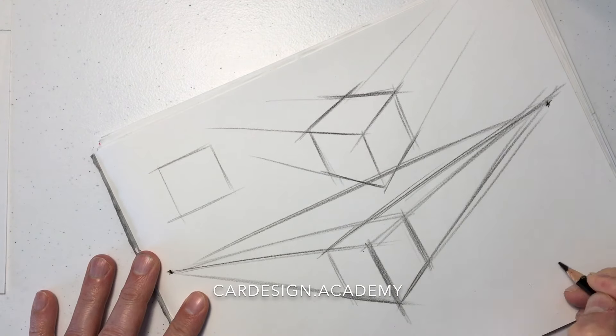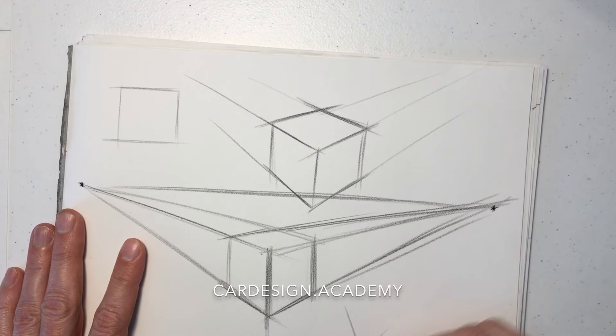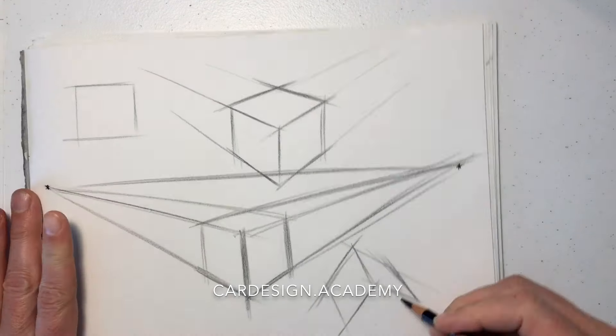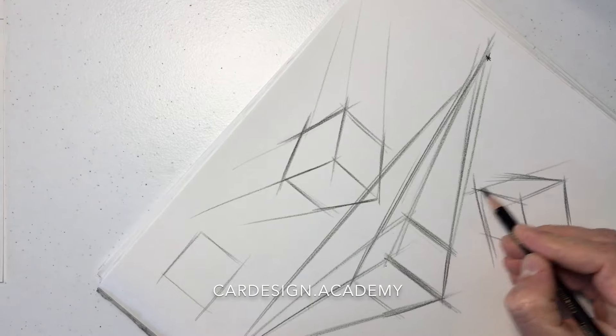It also depends on the focal length of the viewing angle that we're trying to get. If the vanishing points get further apart, the lines become more parallel.